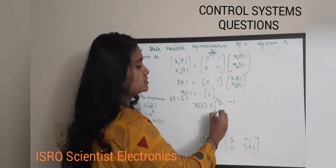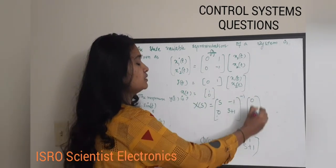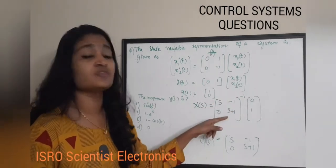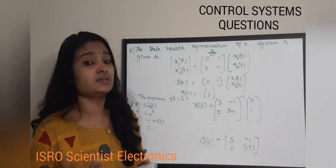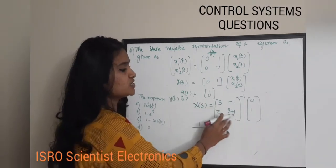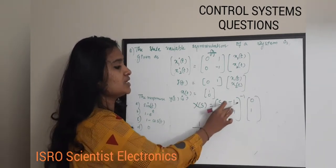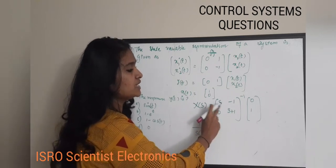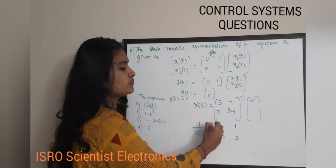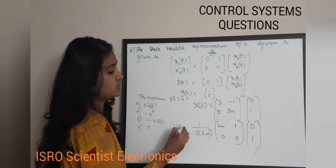Substituting into the state equation: φ(s)·x(0) = [s, -1; 0, s+1]⁻¹ · [1; 0]. To find the inverse of a 2×2 matrix, use adjoint divided by determinant. The determinant of [s, -1; 0, s+1] is s(s+1). The adjoint is formed by swapping diagonal elements and changing signs of off-diagonal elements: [(s+1), 1; 0, s].